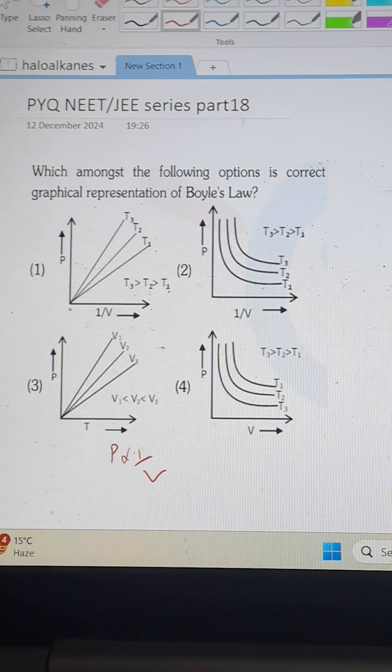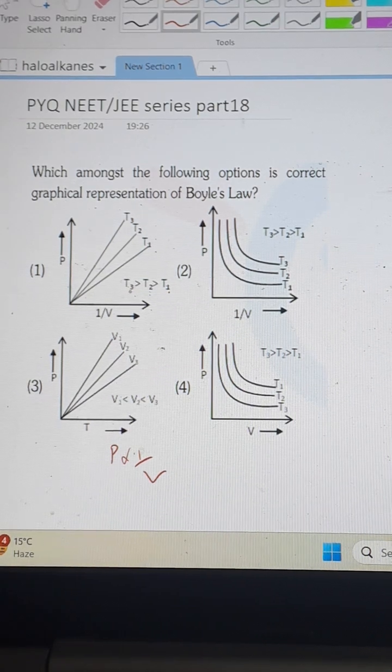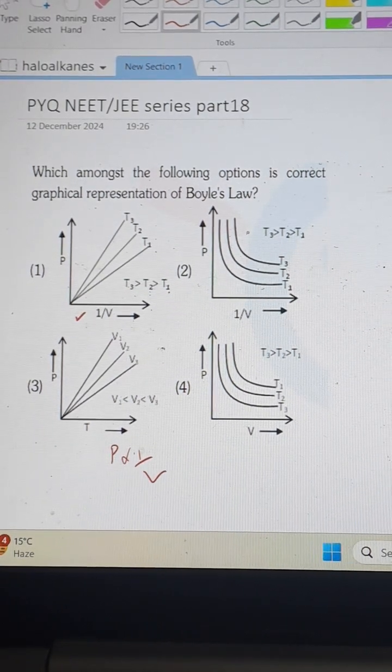See the first option P versus 1 by V. The graph should be straight line, the graph is correct.